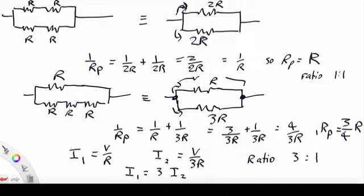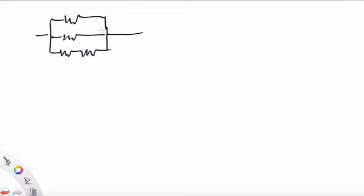And I'll continue over the page. Now our third circuit has three branches. We have R in the top and R in the second and then two lots of R in the third.